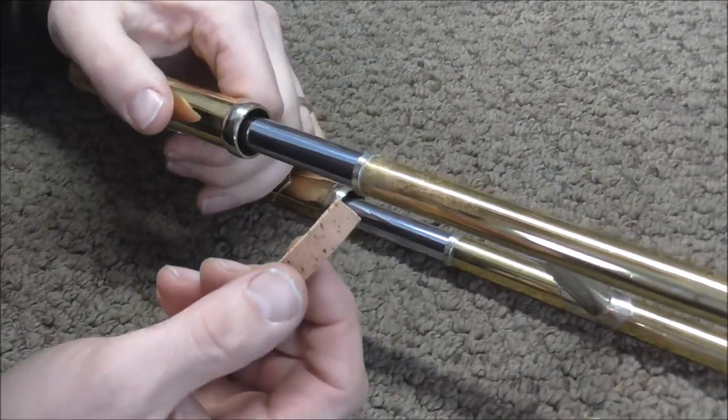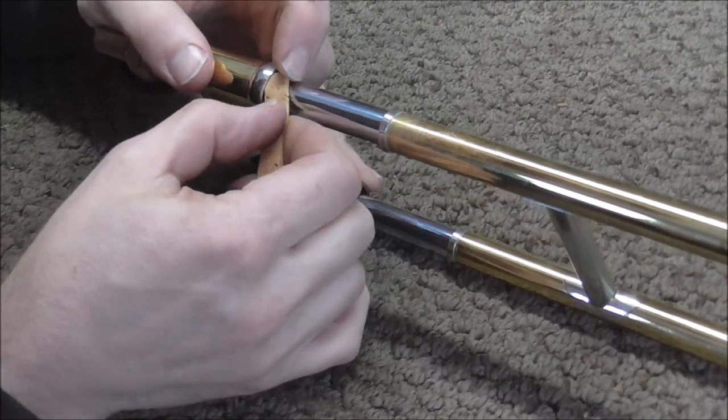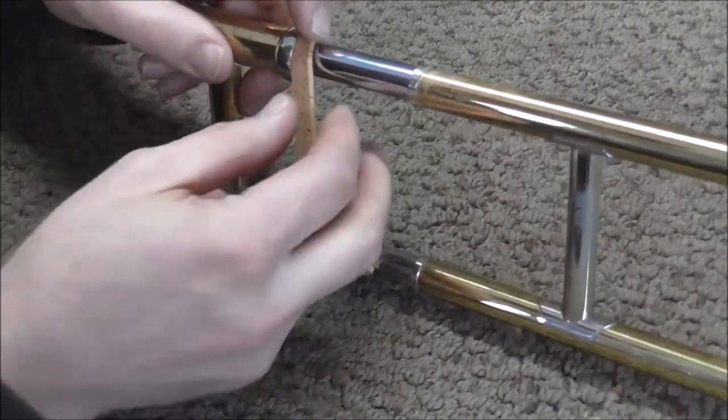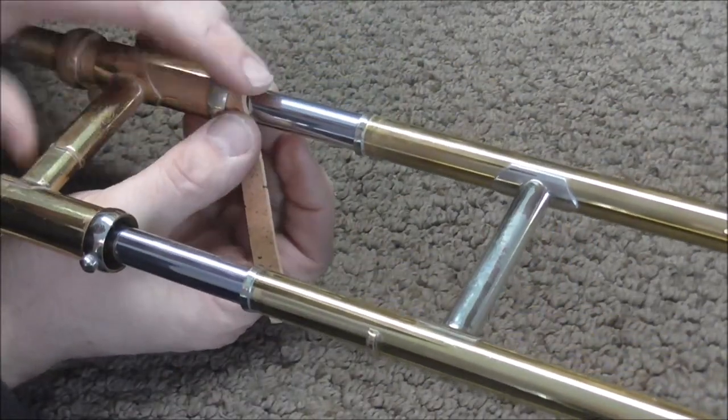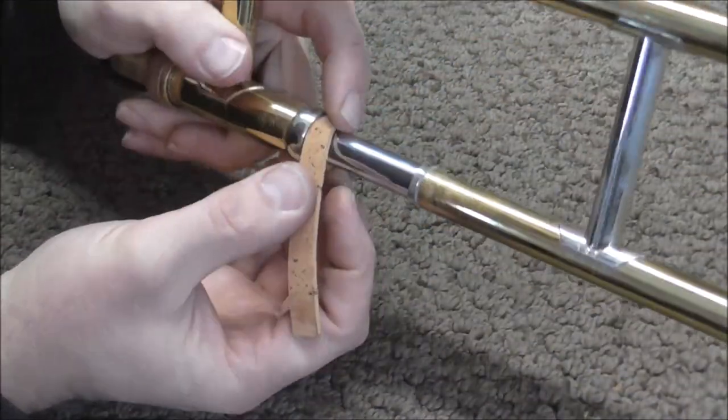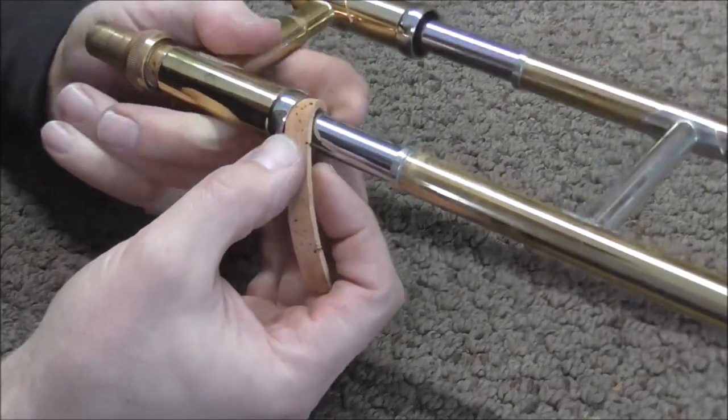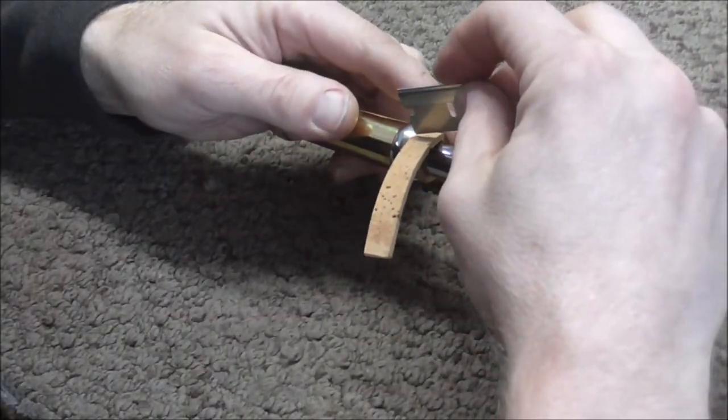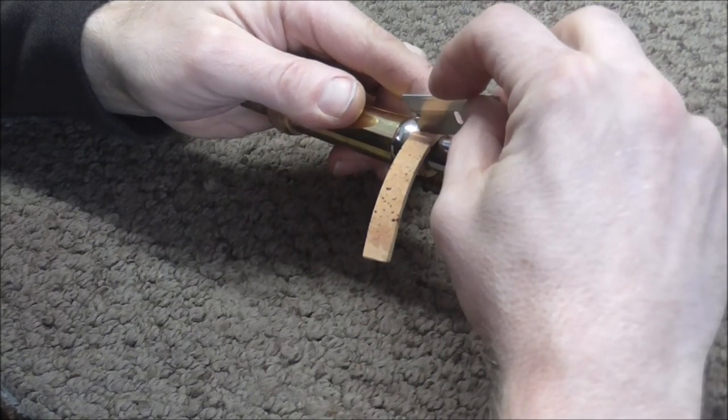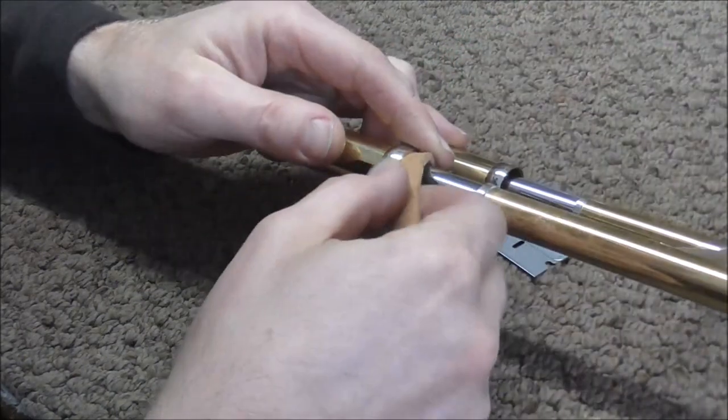And now you need to install the cork. So you take it and slide it in at a diagonal, and just go around all the way until you reach the other side. And take the razor and cut it where it needs to be like that.